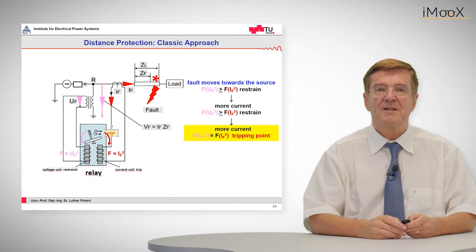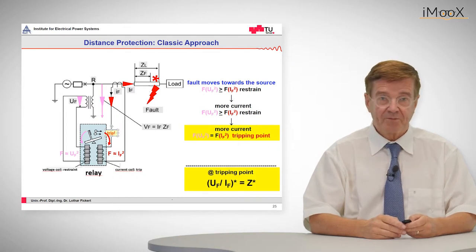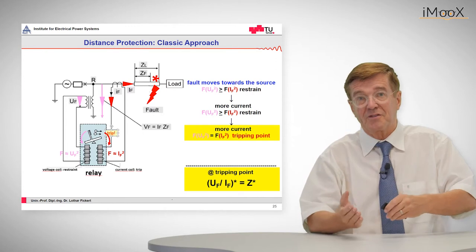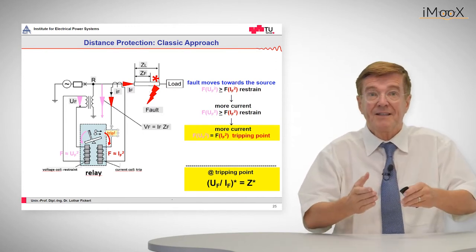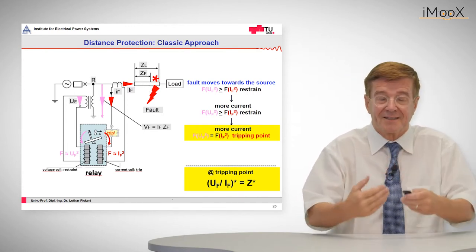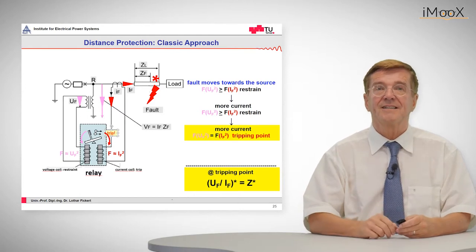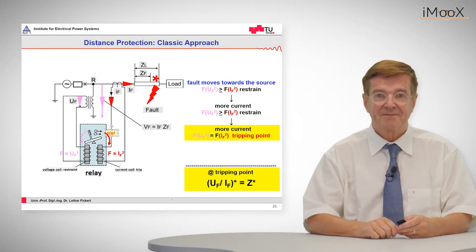So this trip zone will mean that at the tripping point, the ratio between voltage and current forces, or voltage and current, is at a critical value and that is the so-called tripping impedance, Z star.